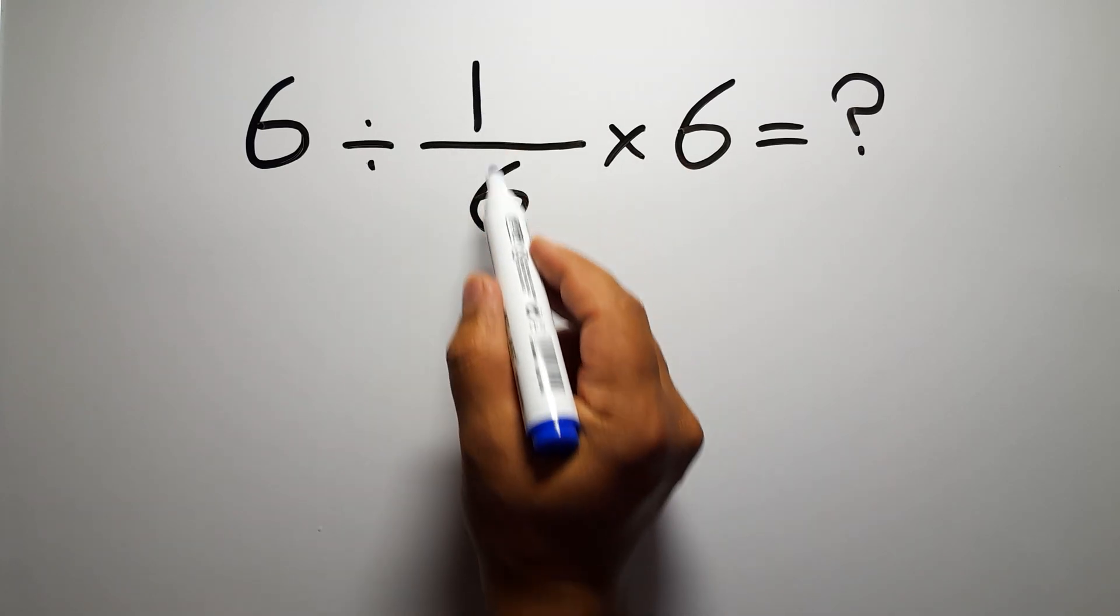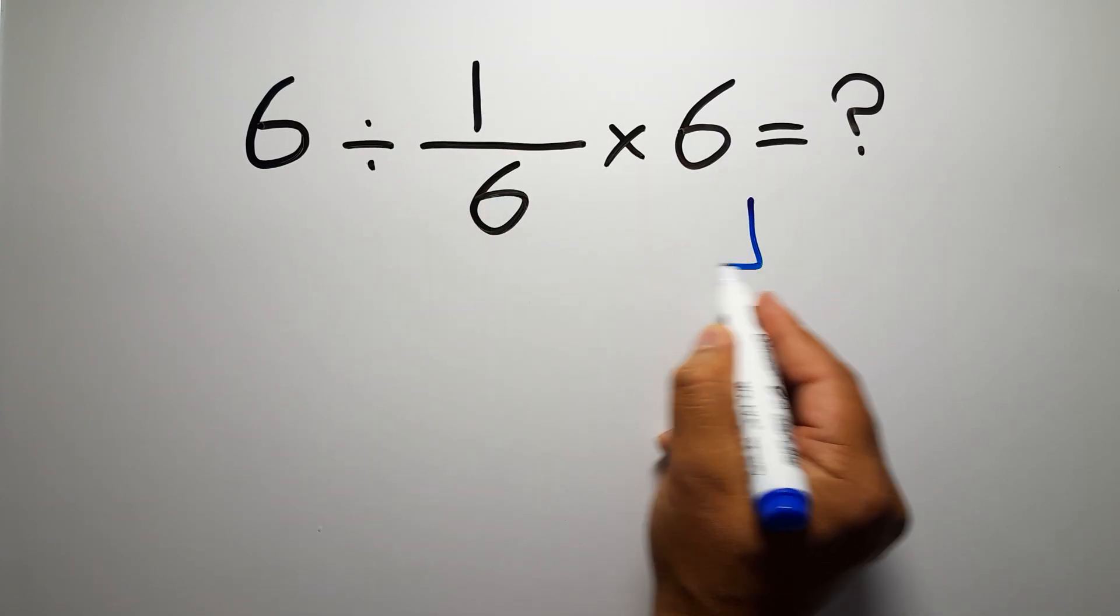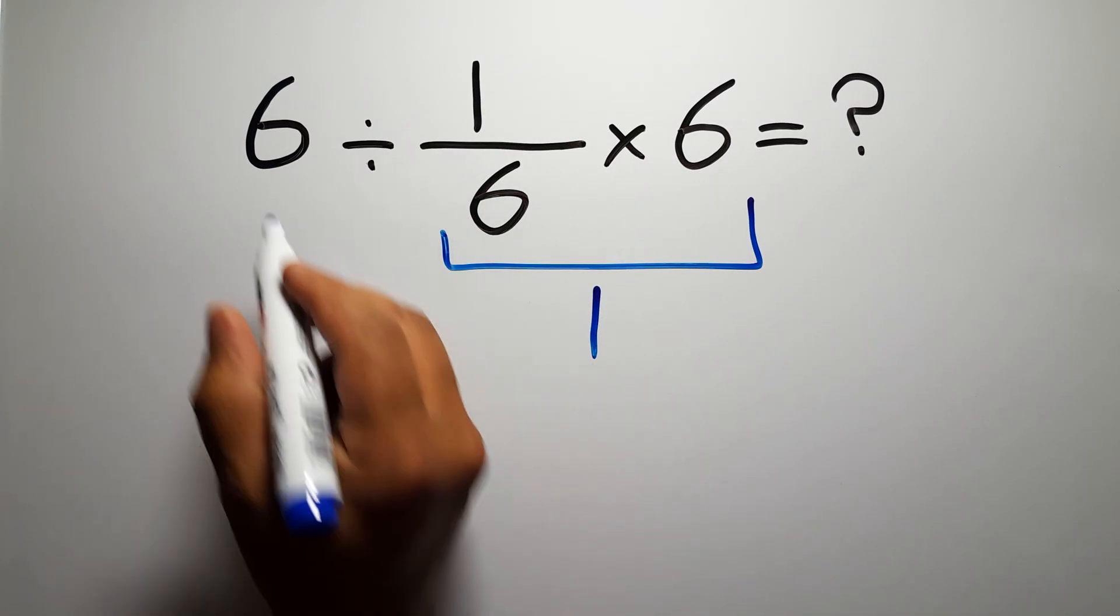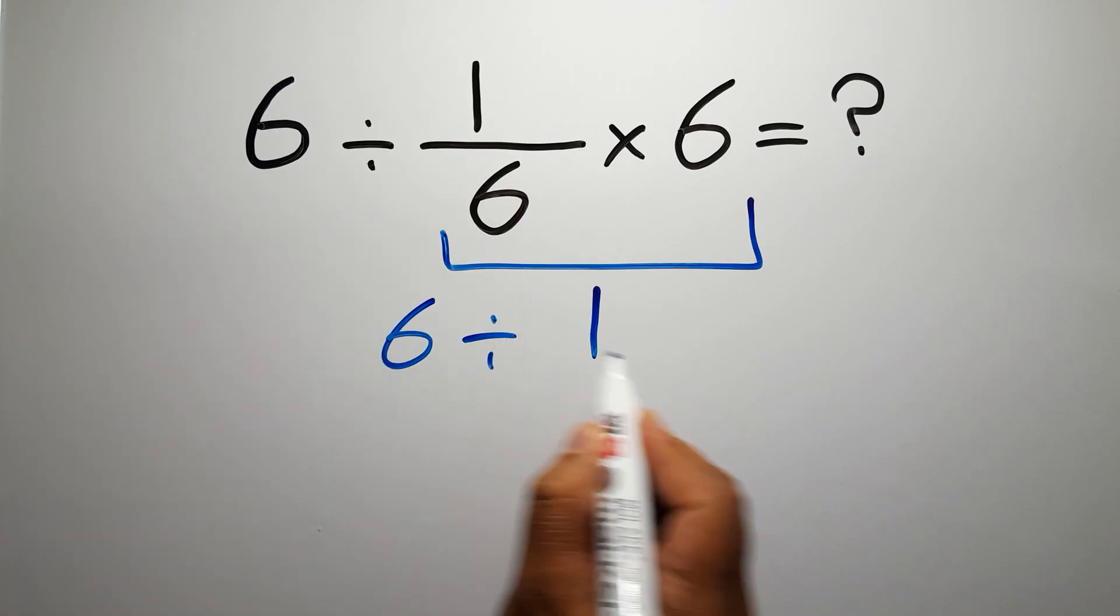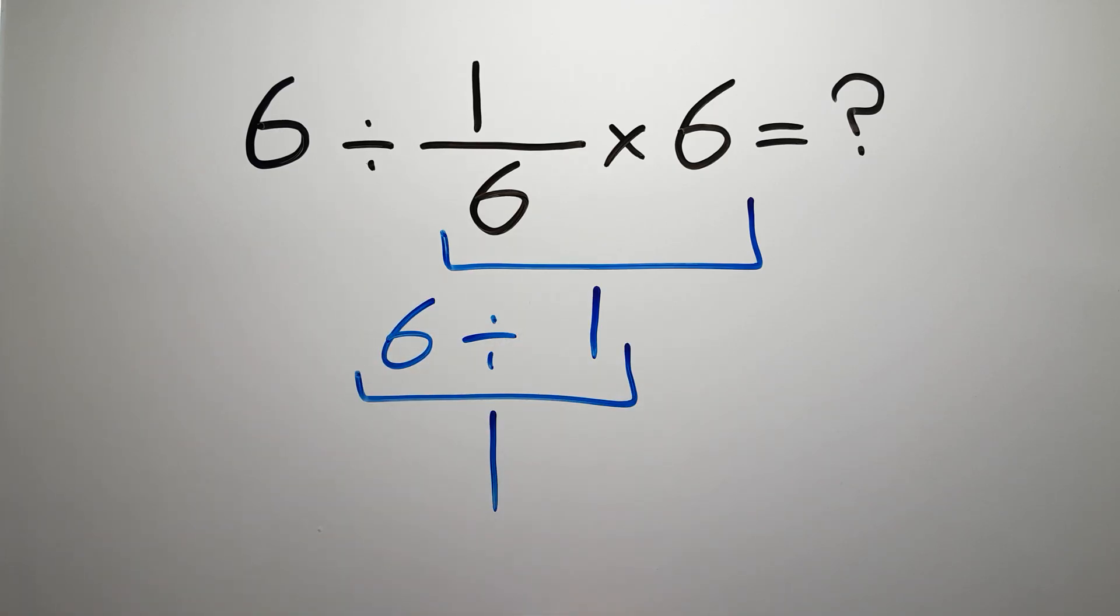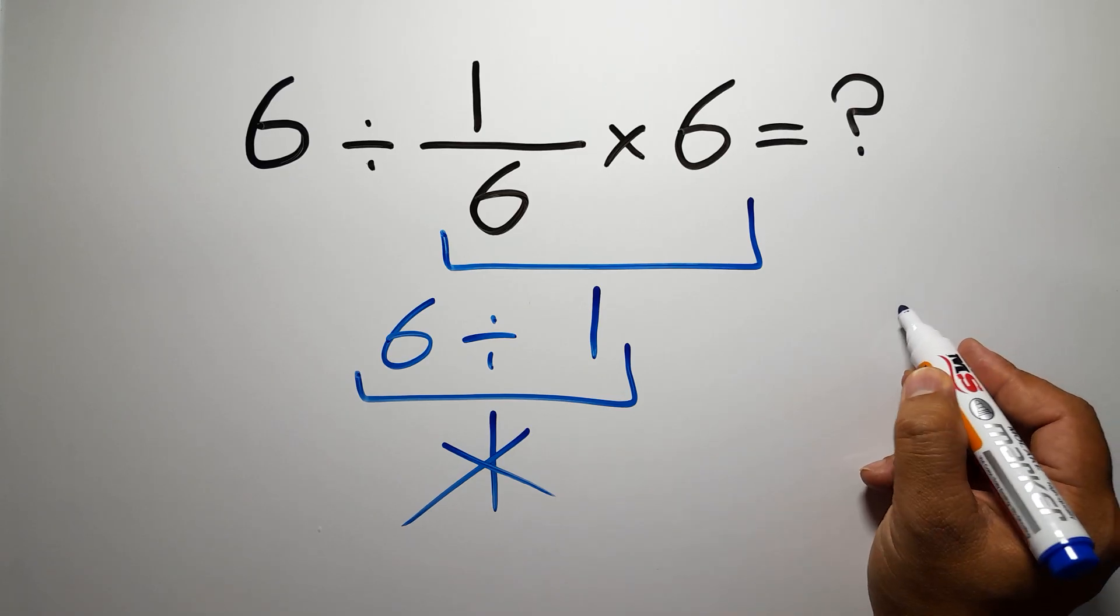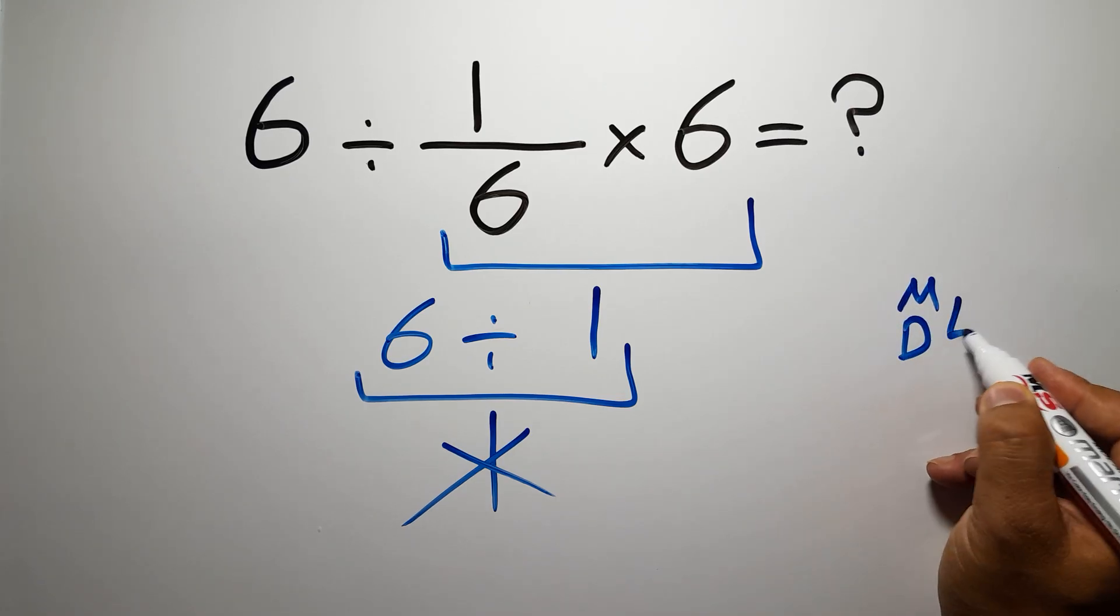First we do this multiplication: 1 over 6 times 6 is just 1, so 6 divided by 1 gives us 1. But this answer is not correct because according to the order of operations, multiplication and division have equal priority.